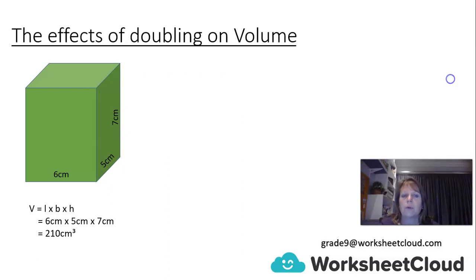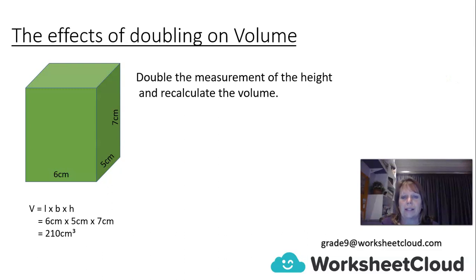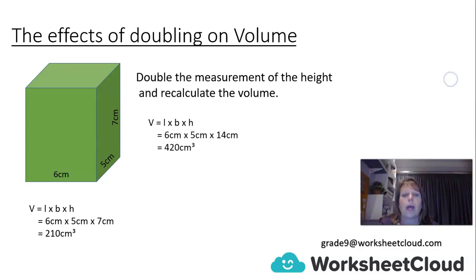Now we're going to double the height, keeping our length and breadth the same. Doubling the height gives us 14 cm, so it's 6 times 5 times 14. And what do we get? 420 cm cubed. So it looks like whatever side you double — the length, breadth, or height — you're going to double the volume.